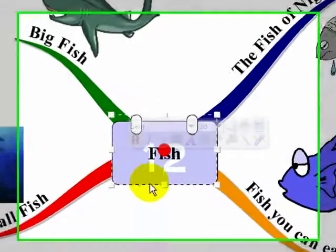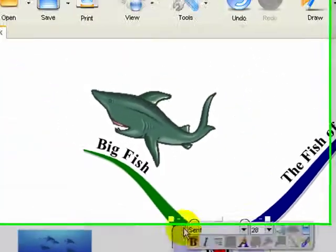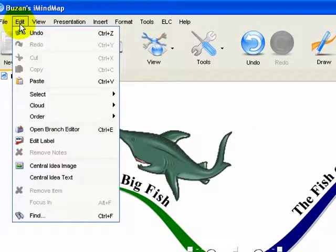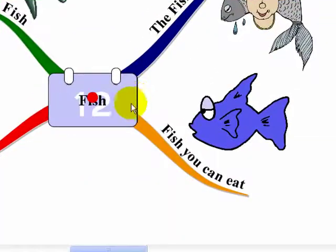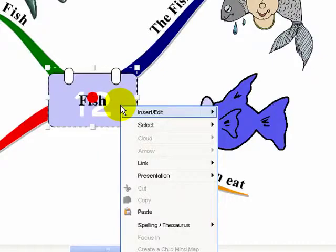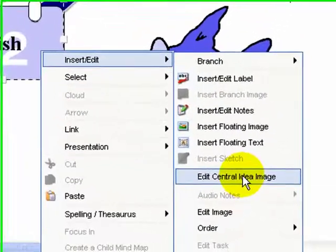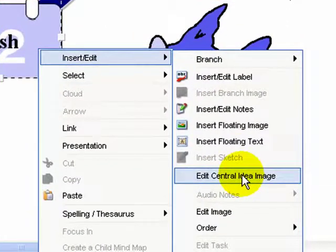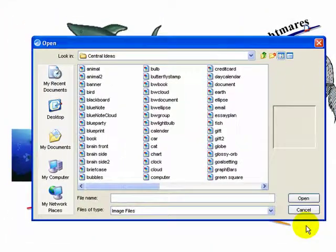Either we can go to the edit function at the top and edit the central idea image there, or we can right click on it, go to insert edit, and go down to edit central image there. Whichever way we do it will bring up the list of the images.